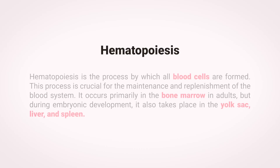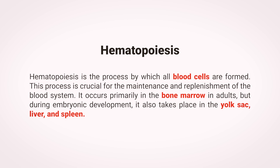Hematopoiesis is the process by which all blood cells are formed. This process is crucial for the maintenance and replenishment of the blood system. It occurs primarily in the bone marrow in adults, but during embryonic development, it also takes place in the yolk sac, liver, and spleen.